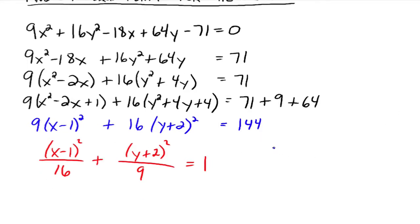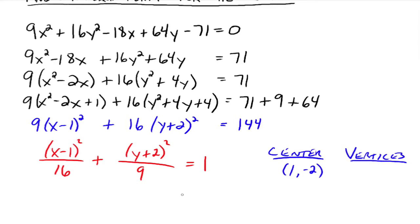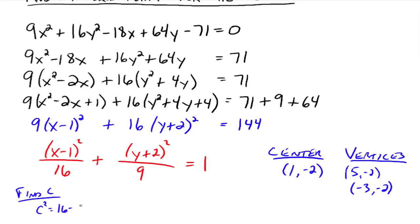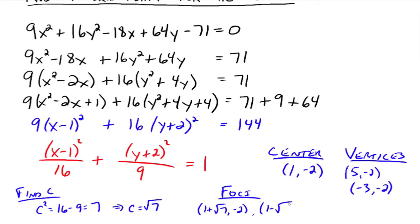The center is 1, negative 2. Since 16 is larger than 9 and under the x squared, it has a horizontal major axis. To get the vertices, add and subtract the square root of 16 — which is 4 — to the x part of the center: vertices are 5, negative 2 and negative 3, negative 2. For the foci, C squared equals 16 minus 9 equals 7, so C equals square root of 7. The foci are 1 plus square root of 7, negative 2 and 1 minus square root of 7, negative 2.